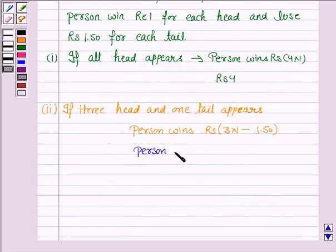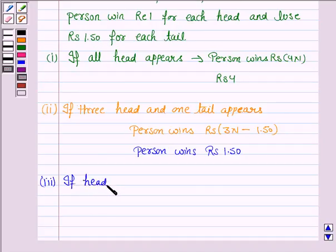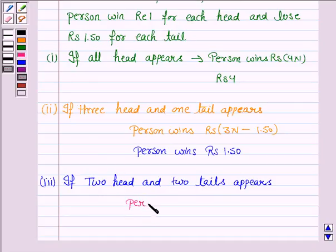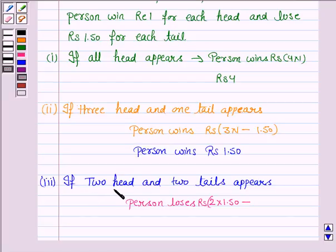The third possibility is if two heads and two tails appear. If two tails appear, then the person loses. He loses rupees 3 minus the amount which he wins from the two heads, which is rupees 2. So the person loses rupees 3 minus 2, that is rupees 1.